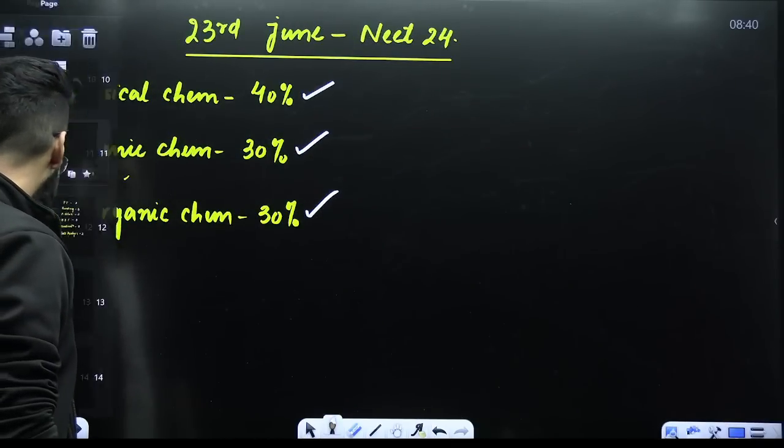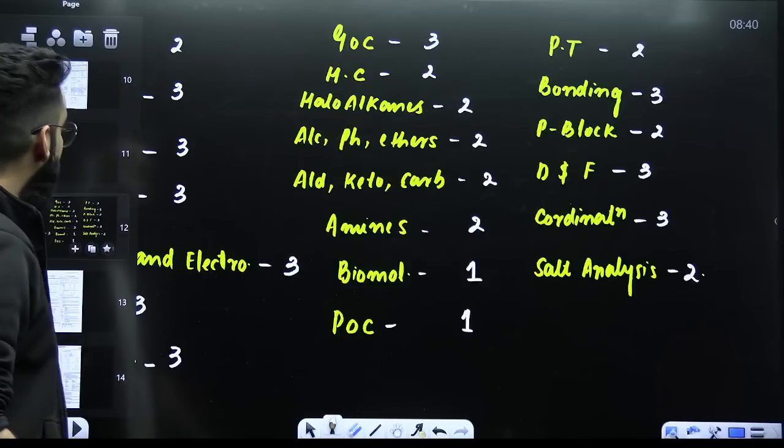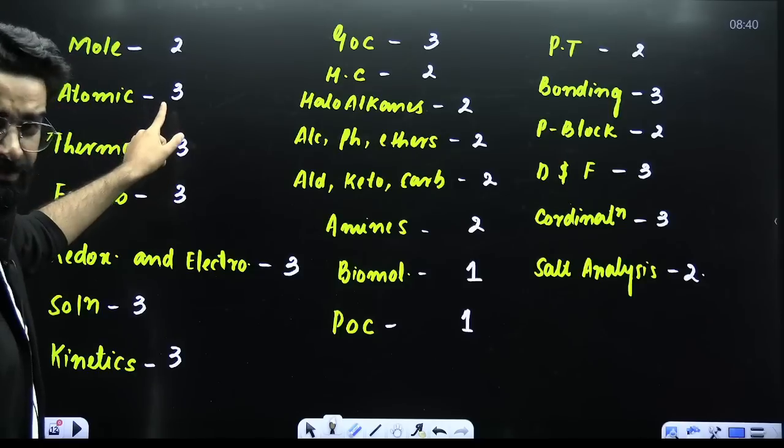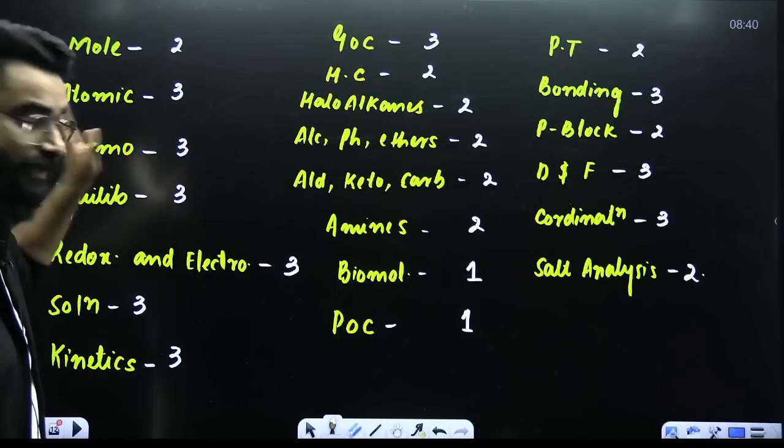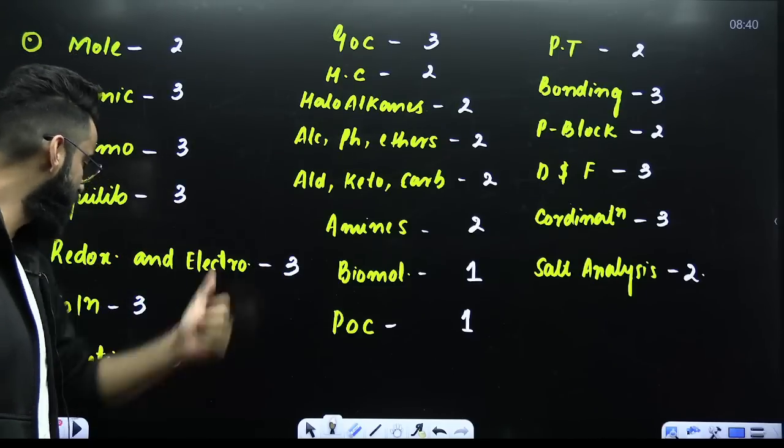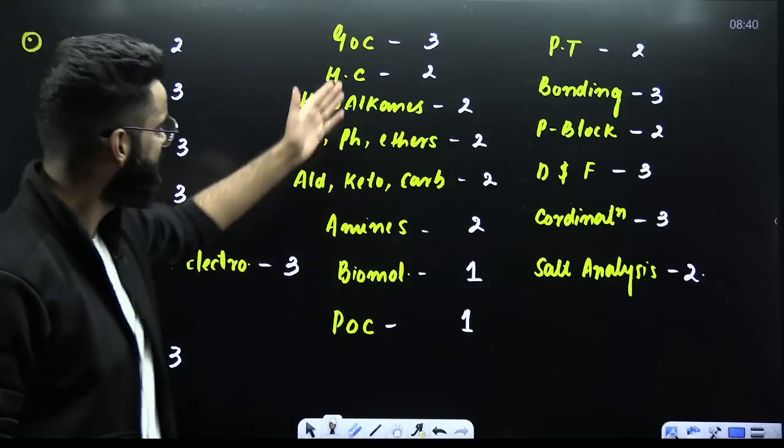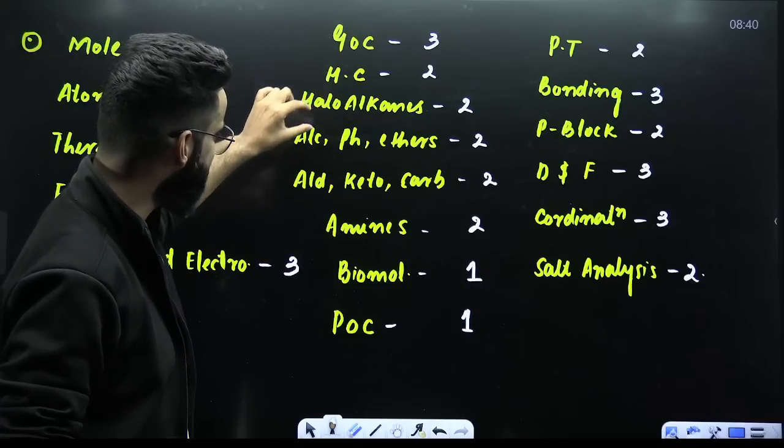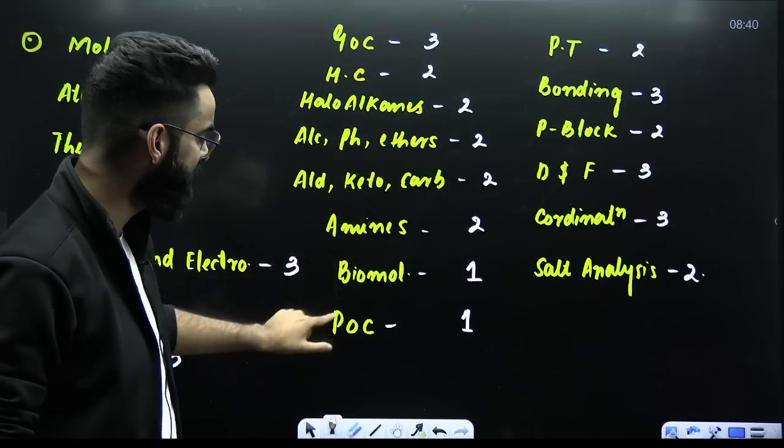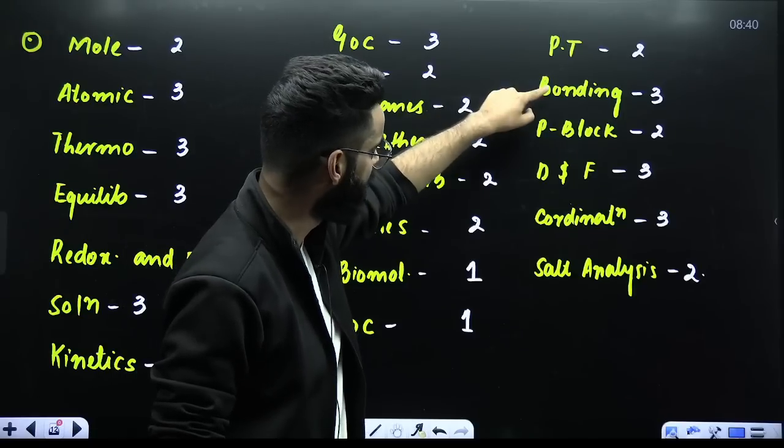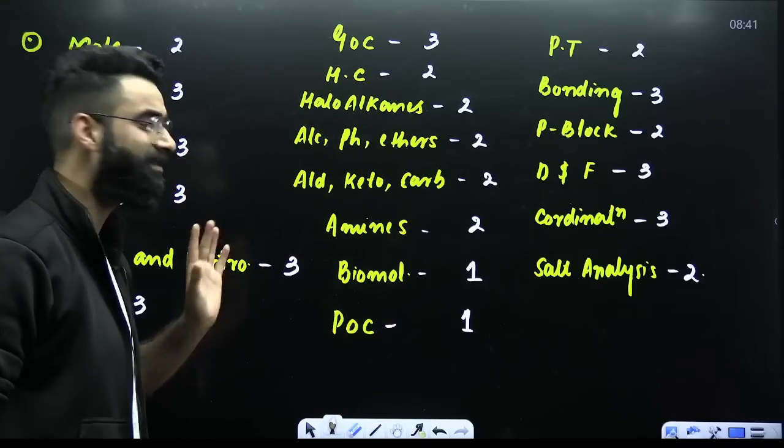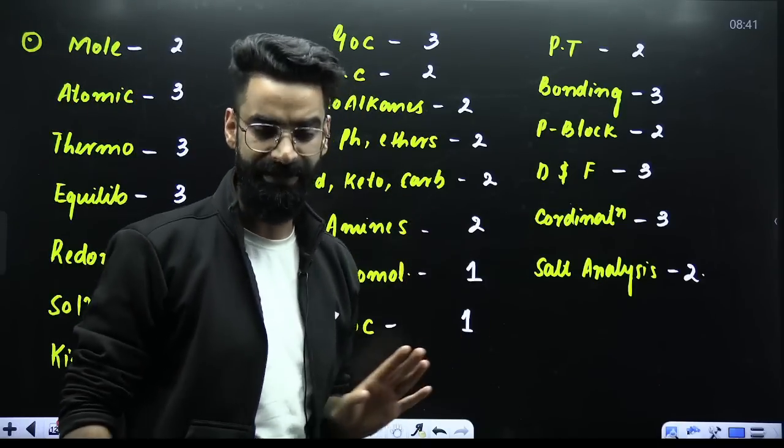And if you exactly see from which chapter like how many questions were asked, so have a look exactly. From the mole concept, two questions were asked. Atomic structure, three questions. Thermodynamics and thermochemistry, three questions. Equilibrium, three questions. Redox and electro combinedly, three questions. Solution, three questions. Kinetics, three. Similarly, GOC, hydrocarbon, haloalkanes, arines, alcohols, phenols, ethers, aldehydes, ketones, carboxylic acids, amines, biomolecules, practical organic chemistry, periodic table, chemical bonding, P block, D and F coordination, salt analysis. And I have exactly mentioned the number of questions which were asked from each of these chapters.